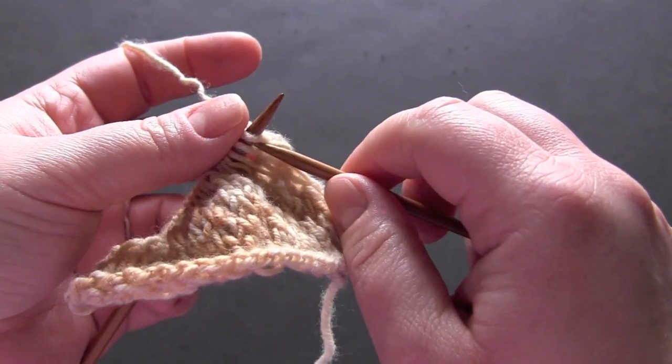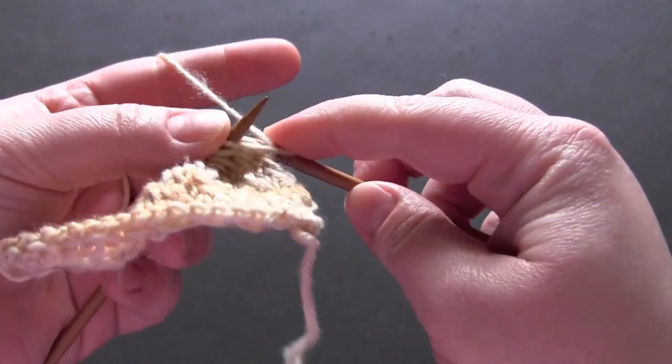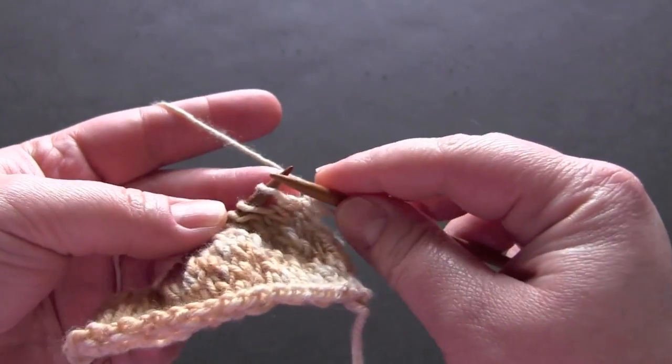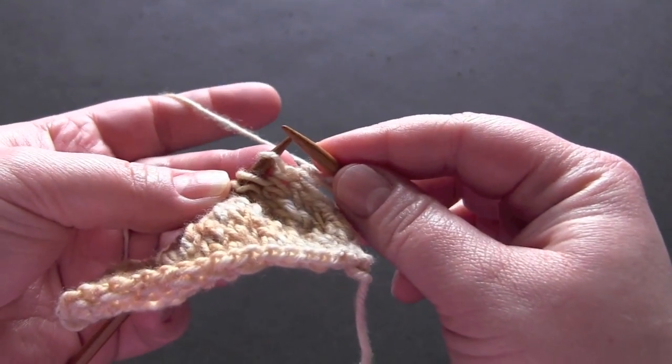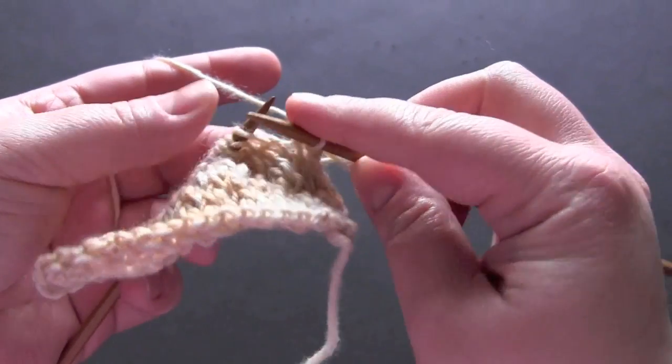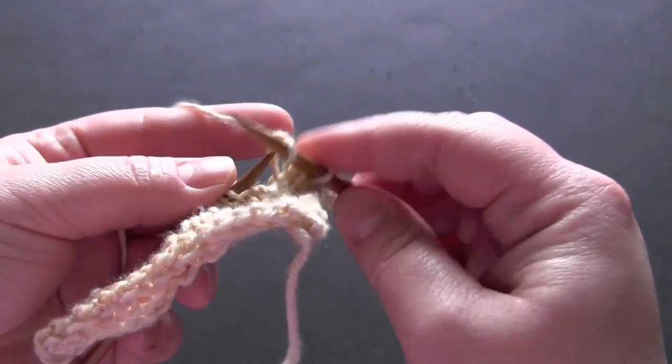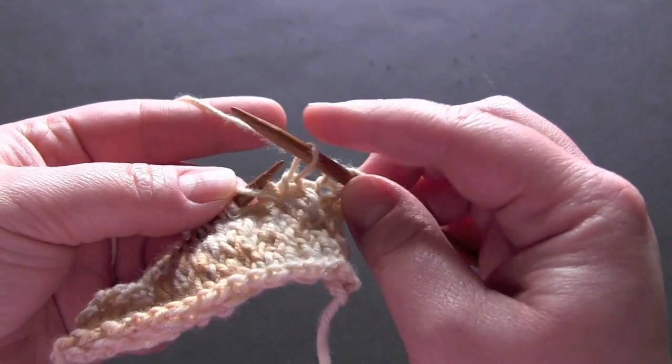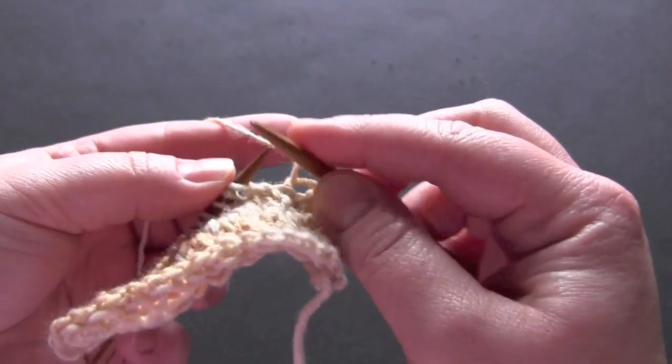For row one, you're going to knit one and then slip one and you're going to want your yarn in the back of the work and you just slip the stitch purlwise like this. So you knit and slip all the way across the row.